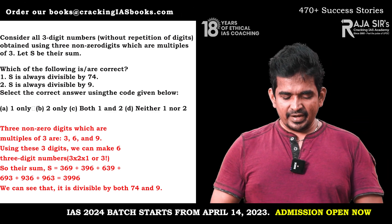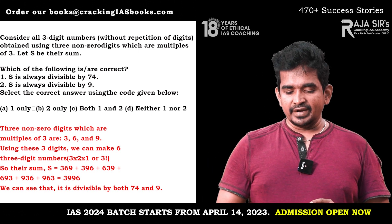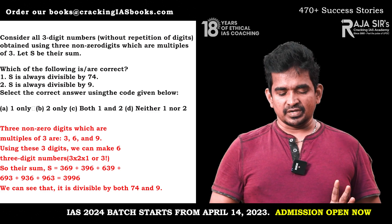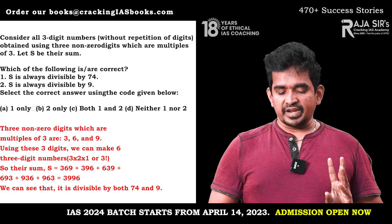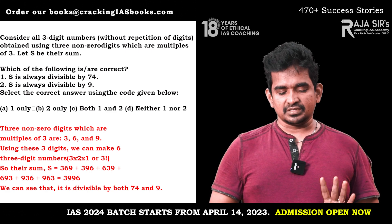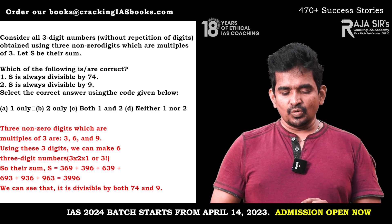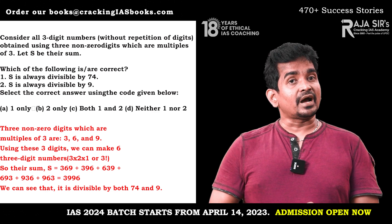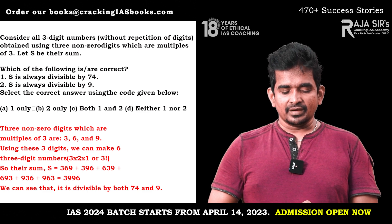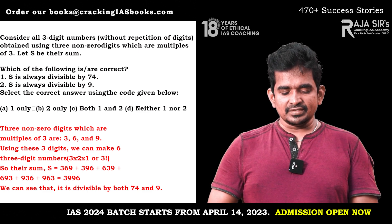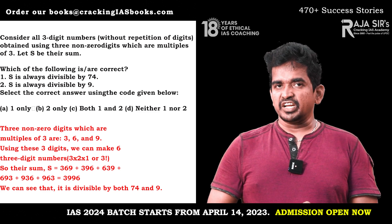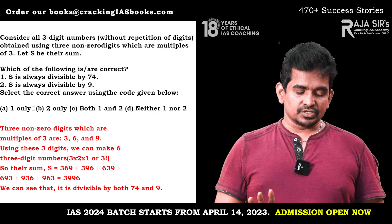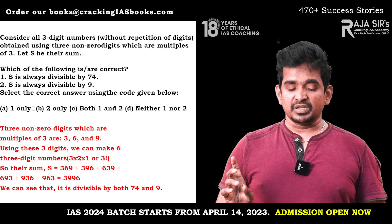We have counted all the hundreds. Now we're left with the tens and units: 69, 96, 39, 93, 36, 63. Now, 93 is close to 100, so pair it with 36 to get 136. Then 96 is close to 100, so pair it with 69 to get 169. So we've handled the near-hundreds. Now we're left with summing 69 + 96 + 39 + 93 + 36 + 63.